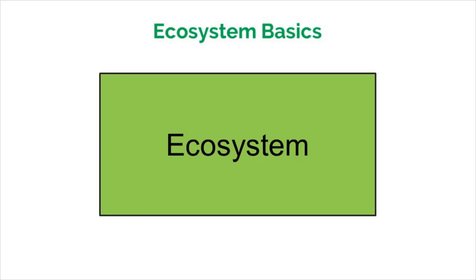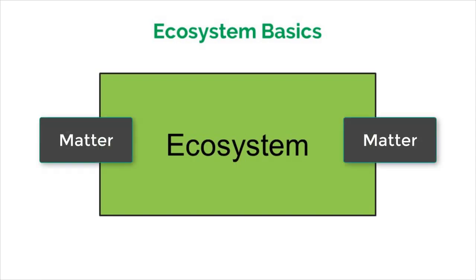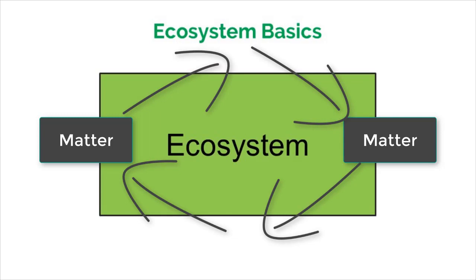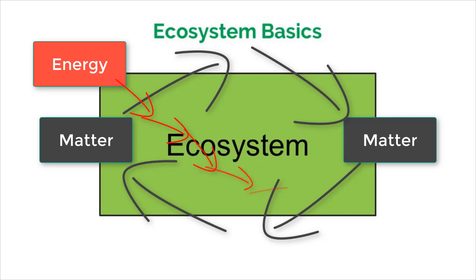In video 4.1, we learned that matter, or nutrients, are cycled and reused in an ecosystem. That cyclical nature only applies to matter and does not apply to energy. Instead of cycling, energy flows through ecosystems, meaning it enters and also exits and cannot be reused. This difference is very important, and we will discuss why it exists in this video.